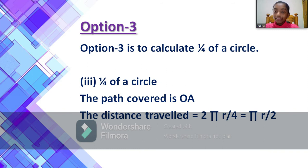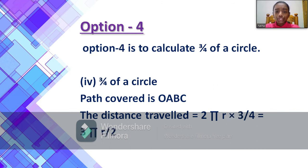Now if you have understood option 3, let's go to option 4. Option 4 is to calculate 3/4 of a circle. So the formula we use for this is 2πr times 3/4, that equals 3πr by 2. I hope you understood all the options clearly and perfectly.